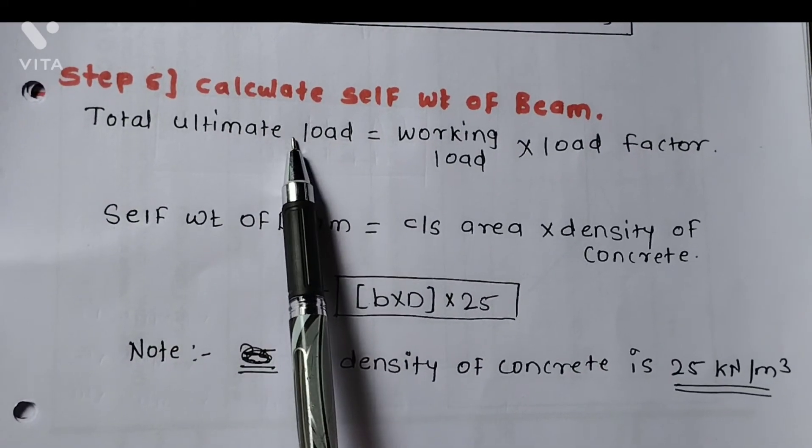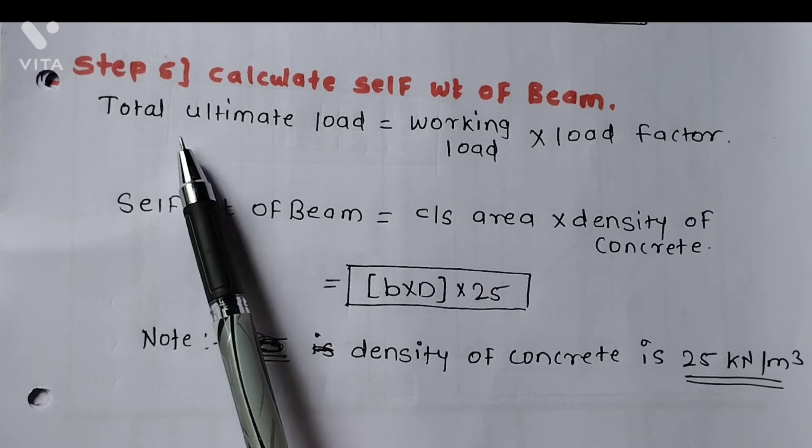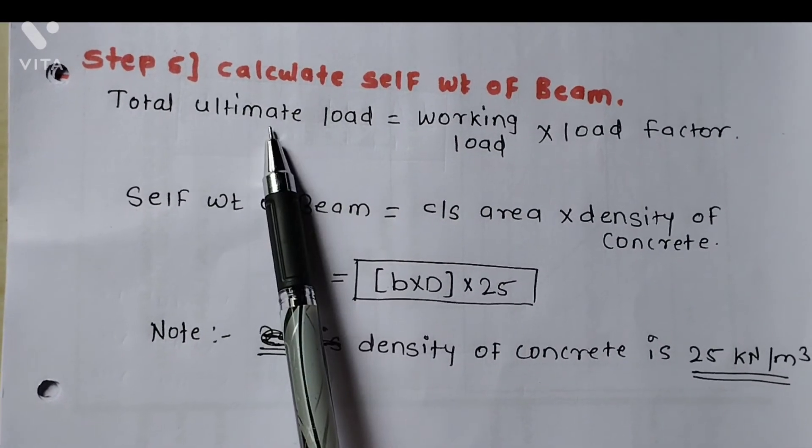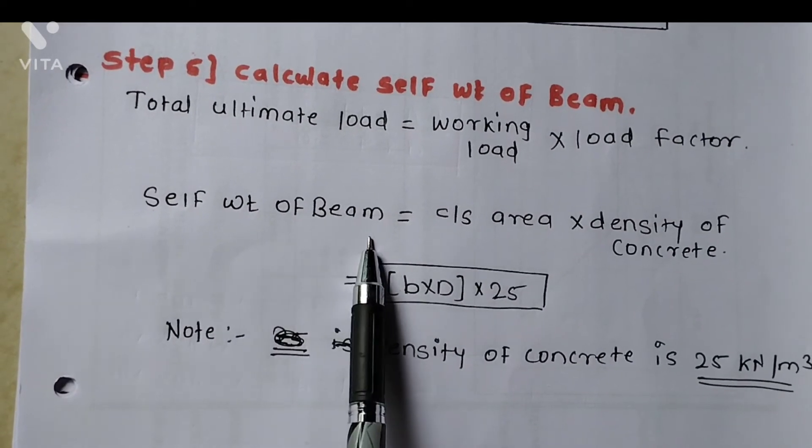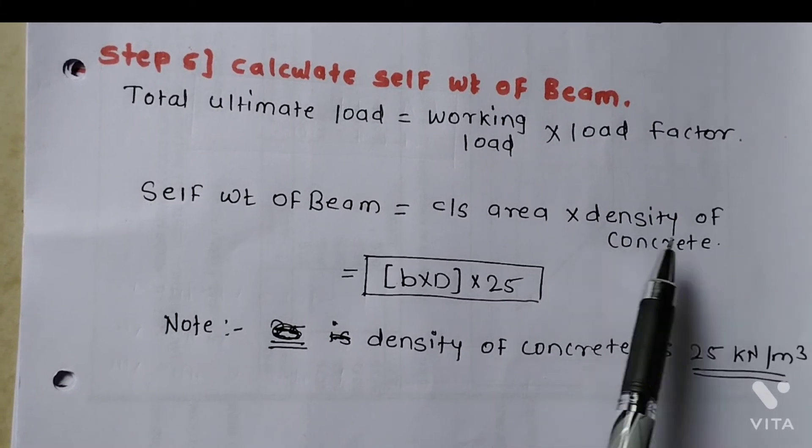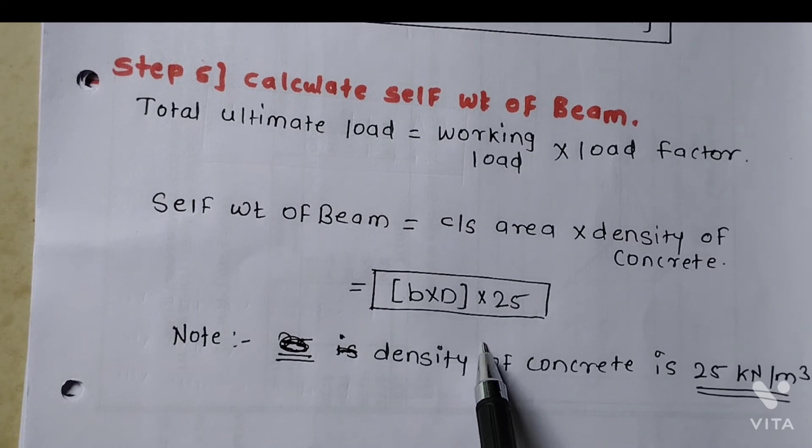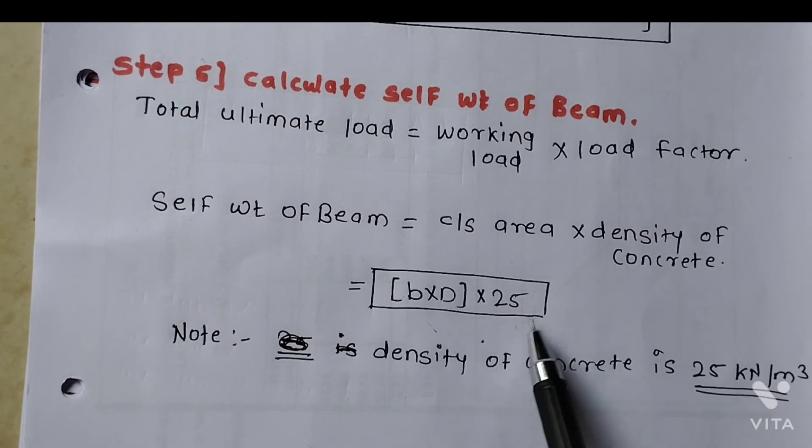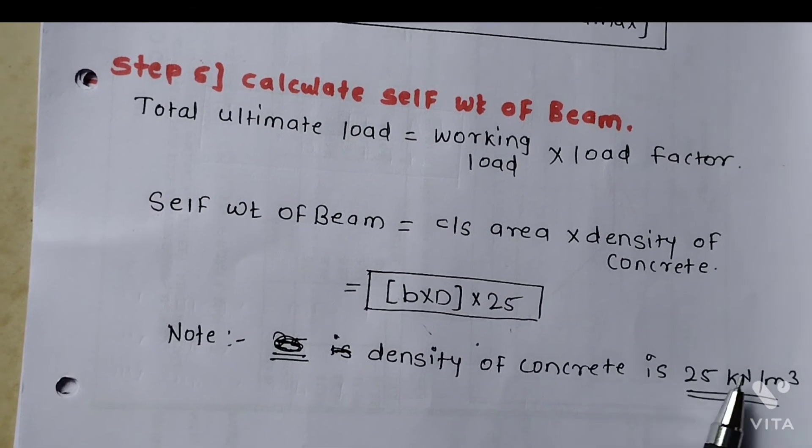Step 5: To calculate the self-weight of the beam. Total ultimate load equals working load into load factor. Self weight of the beam equals cross-section area into density of concrete. Cross-section area means b into overall depth D into 25, and the density of concrete is 25 kilonewton per meter cube.